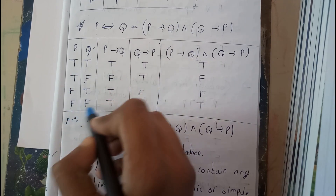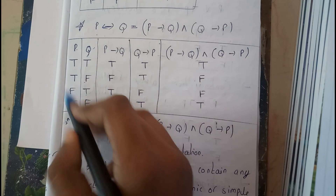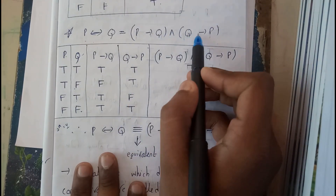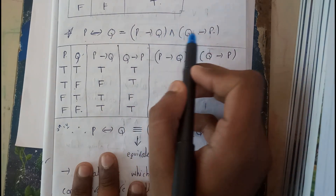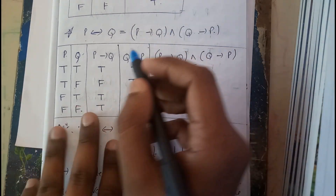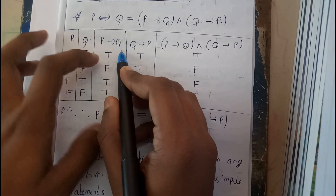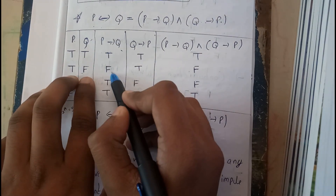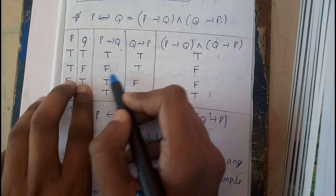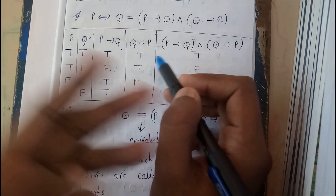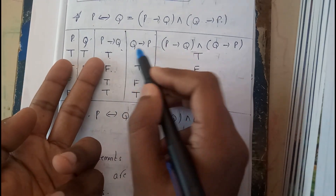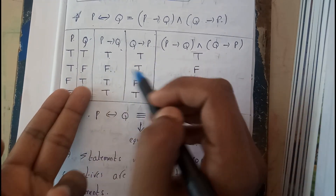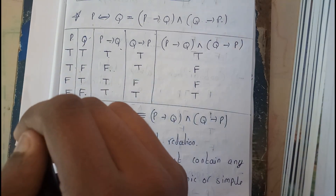Next, write the columns: p implies q, q implies p, and then p implies q AND q implies p. For p implies q: true-false should be false — so T, F, T, T. For q implies p: T, T, T, F — wait, let me clarify — T, T, F, T... filling in carefully according to the single implication rule where true implies false is false.